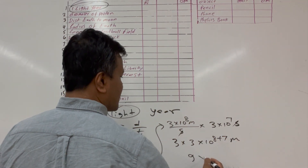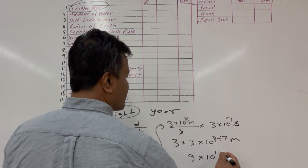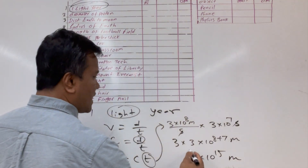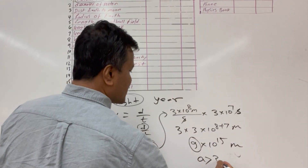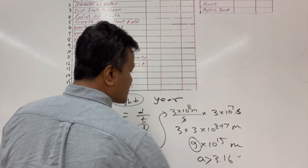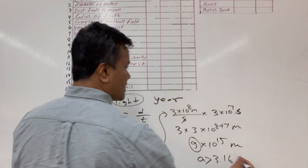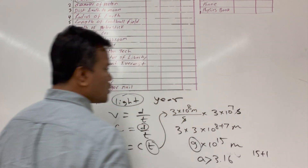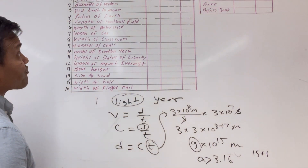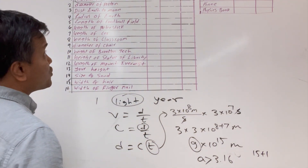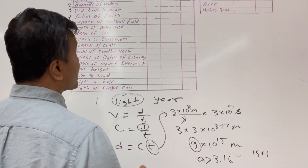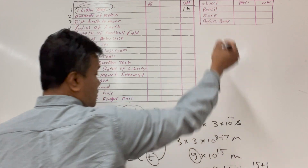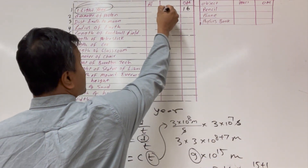So the distance is 9×10¹⁵ meters. Since A equals 9, which is greater than 3.16, then B plus 1 gives 15 plus 1 equals 16. So the order of magnitude is 16, and the scientific notation is 9×10¹⁵.